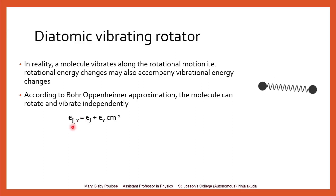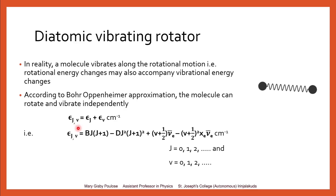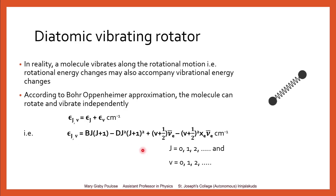J is the quantum number for rotational energy levels and v is the quantum number for vibrational energy levels. Writing the sum, we get the equation: eta(j,v) = B·J(J+1) − D·J²(J+1)² + (v + ½)ν̃_e − x_e·(v + ½)²·ν̃_e, in centimeter inverse.